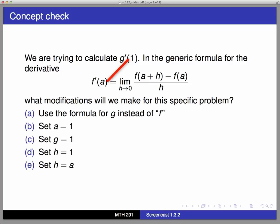For me, in this problem, that is at x = 1. So I'm definitely going to go through everywhere in my generic formula and replace a = 1. I'm certainly not going to set g = 1, because that doesn't make any sense. G is a function, and I don't want to just set the function equal to the number 1.